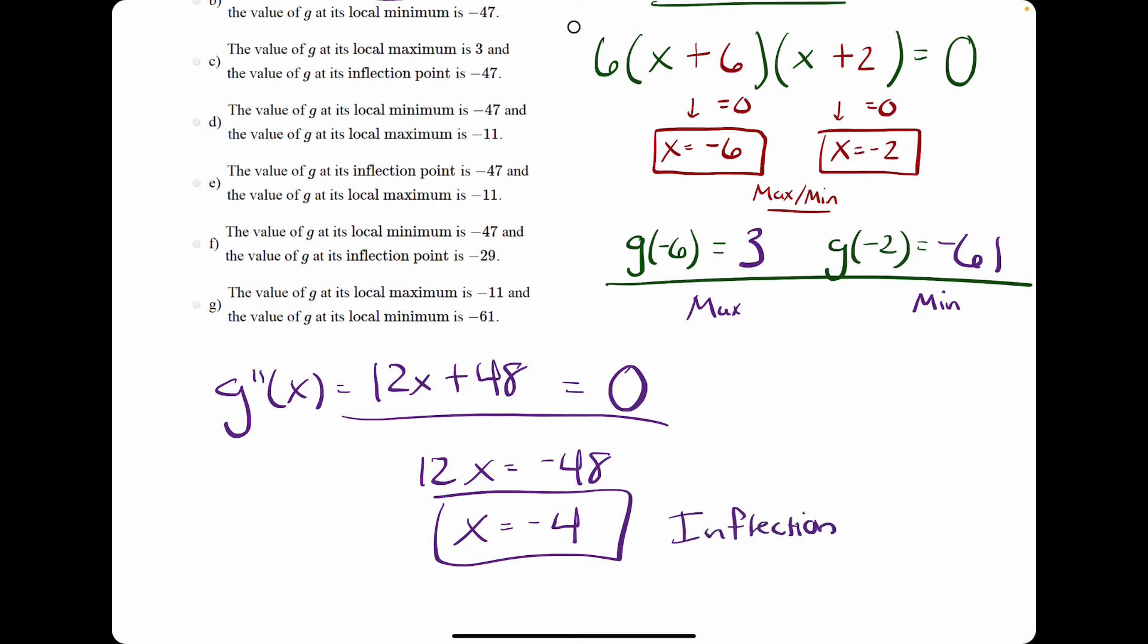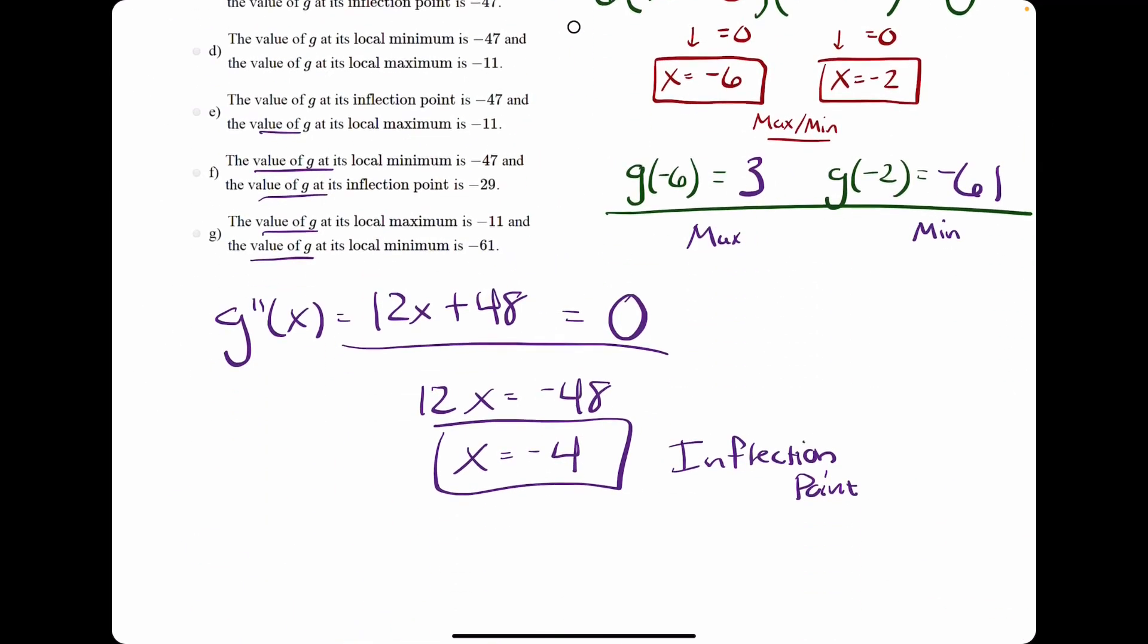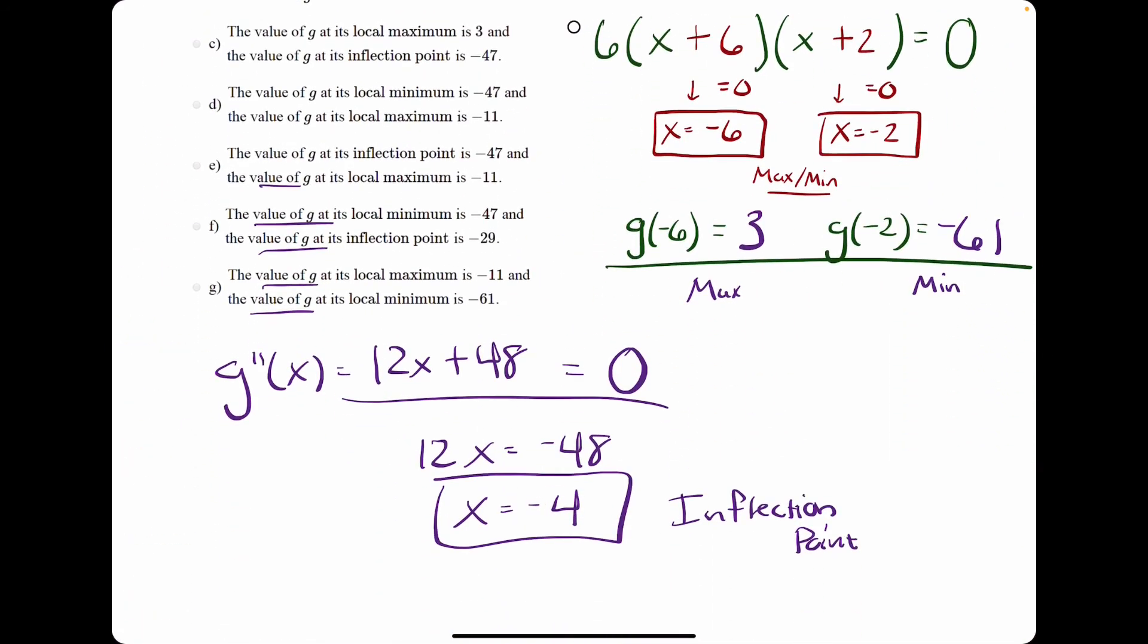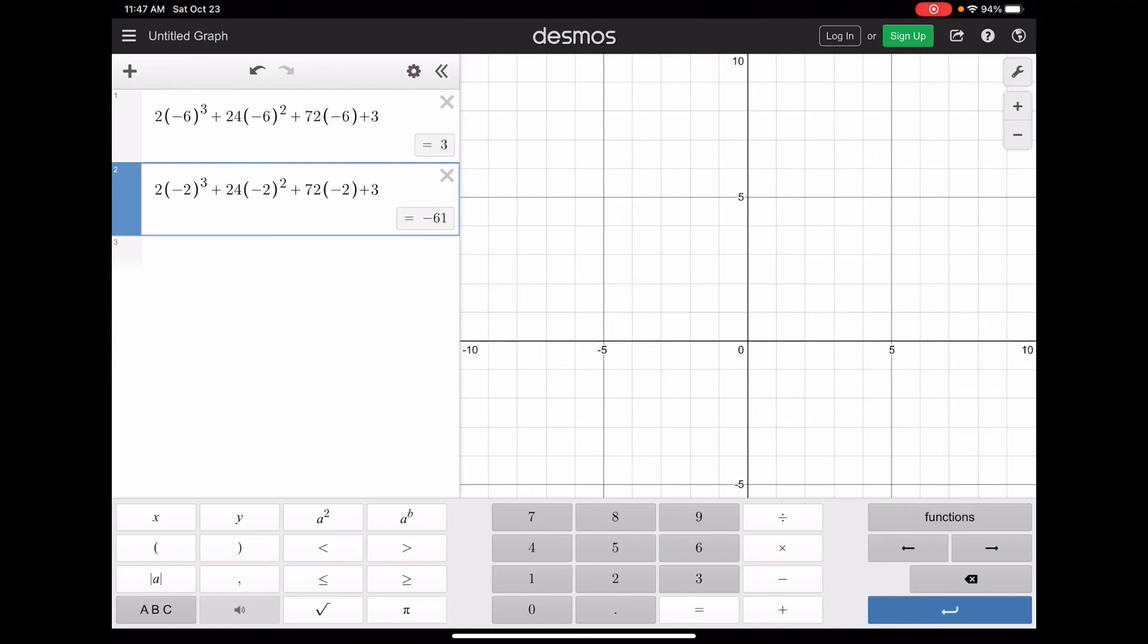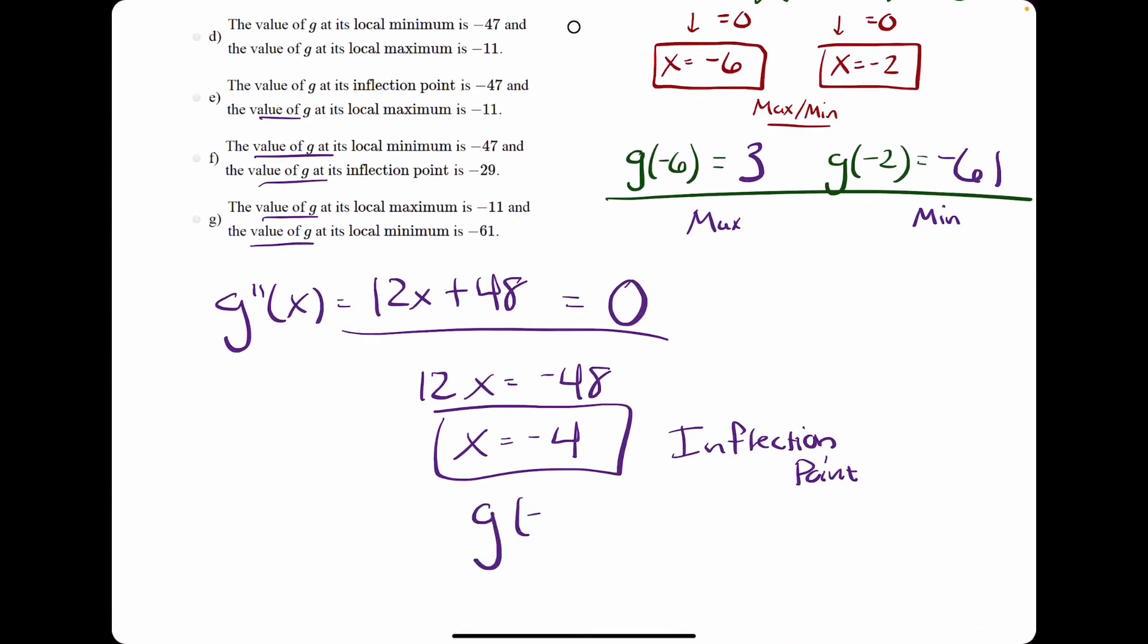But they don't want the location, they don't want the x value. They want the g value. Every single one of these has the value of g. We plug this in to the original function g to find that value. Plugging in negative 4, we get negative 29. g of negative 4 is negative 29.